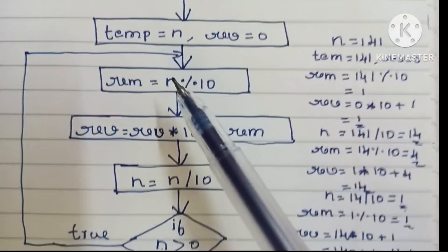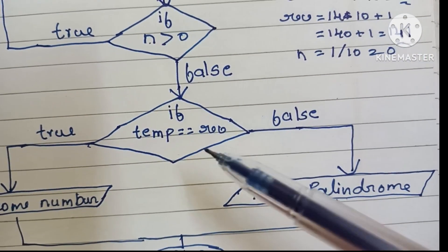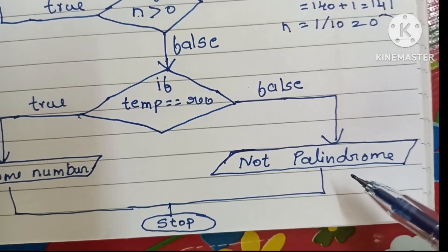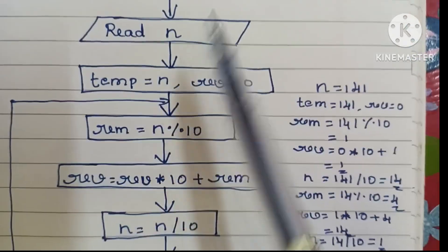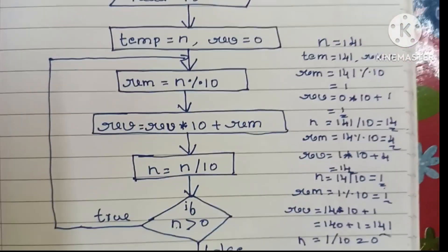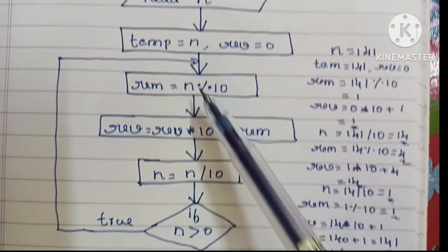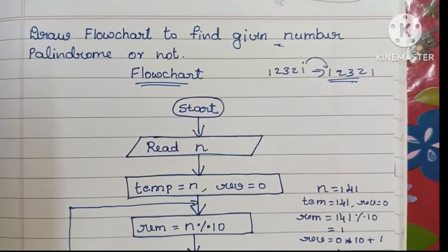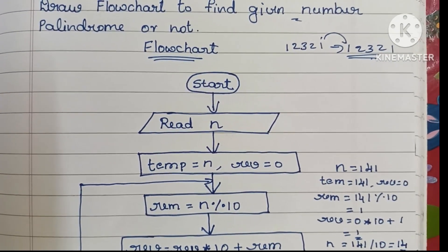We use a diamond shape for the condition if n > 0. If true, repeat the calculation; if false, check if temp equals reverse. If true, print 'palindrome number'; if false, print 'not palindrome'. Start and stop statements are in oval shapes, input/output in parallelograms, calculations and declarations in rectangles, and comparisons in diamonds. If you like my video, please like and subscribe. Thank you for watching — all the best!